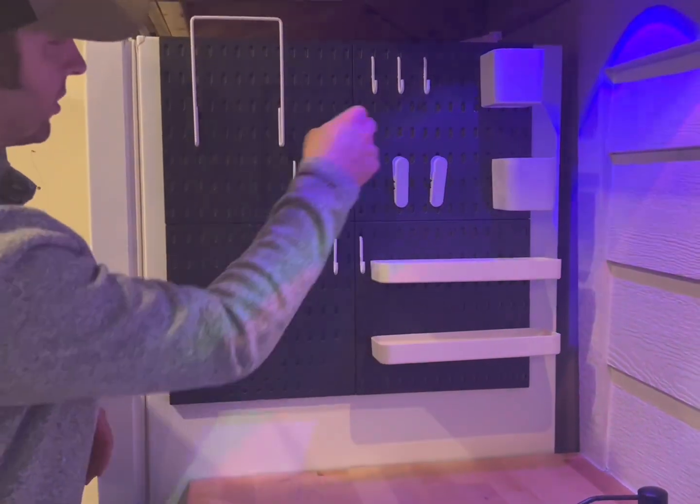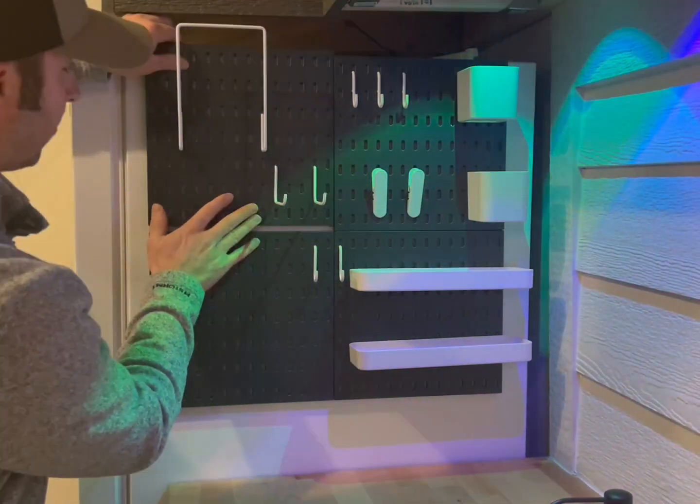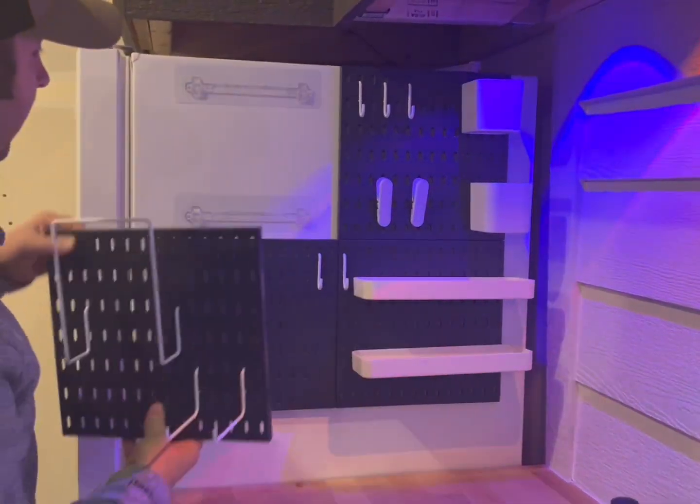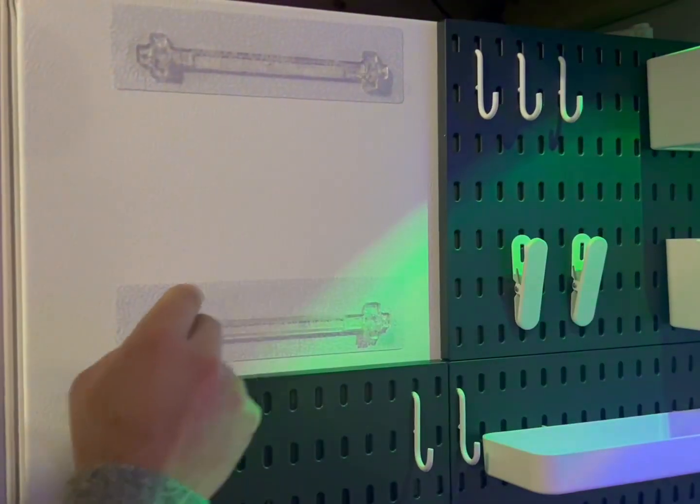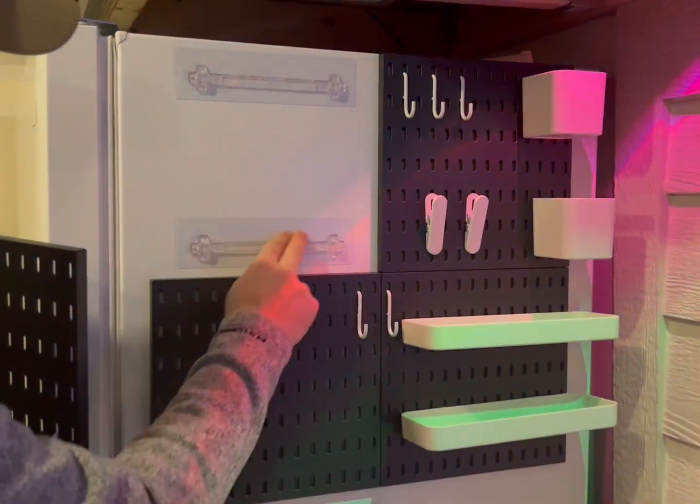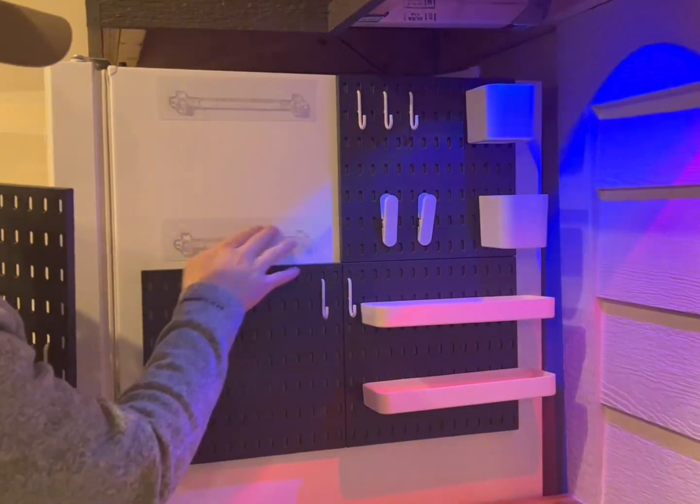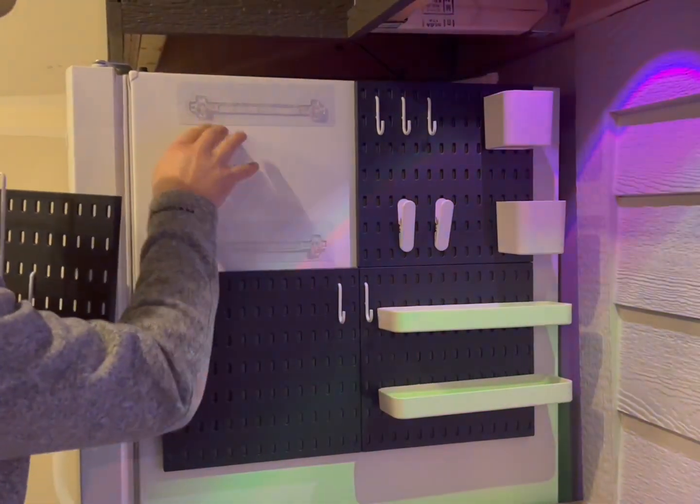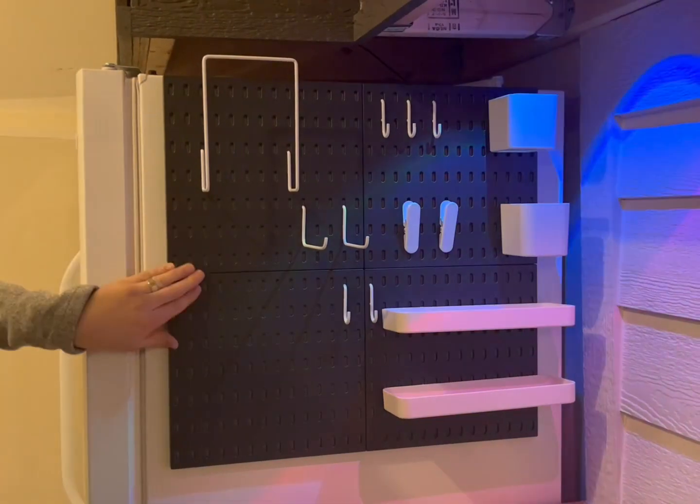This is four different pegboard squares all installed individually. I'll pop this one off and show you this is the bracket that comes with, and you have these brackets for every piece. It's an adhesive, so I just kind of lined it up, stick it on there, and then make sure it sticks nice and easy. It pops on like that and you're good to go.